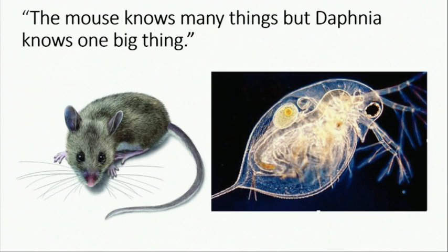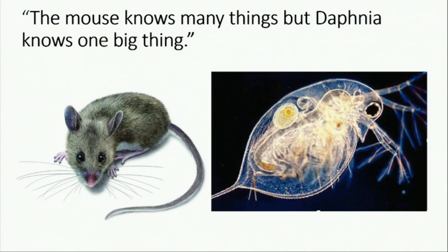You could say the mouse is our fox, and Daphnia is our hedgehog. Its really key feature, which I think is unparalleled, is the ability to test small molecules on it. Because it's very hard to actually add drugs to animals.